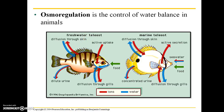A freshwater fish is going to have a lot more concentrated ions within its body than there are outside in the freshwater environment. And it's the opposite of the marine fish — the dissolved ion concentrations are going to be relatively lesser on the inside of this fish than they are in that very salty seawater.